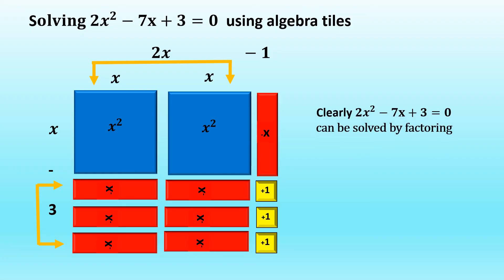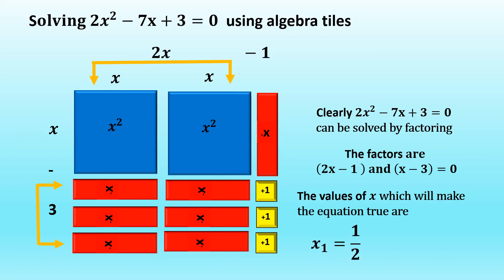Clearly, 2x squared minus 7x plus 3 equal to 0 can be solved by factoring. The factors are 2x minus 1 and x minus 3 equal to 0. The values of x which will make the equation true are x sub 1 is equal to 1 half and x sub 2 is equal to 3. So we have solved 2x squared minus 7x plus 3 equal to 0 using algebra tiles.